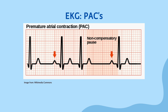On the EKG, PACs appear as early beats, either as isolated or as a series of early beats before the normal sinus beat. They may appear as a P wave that is different from other P waves — a different shape or position may give away a PAC. This is a critical aspect of the EKG that helps diagnose when PACs are happening.